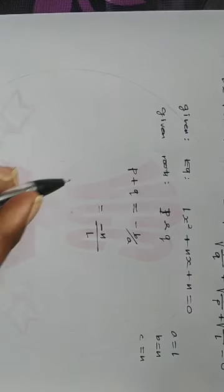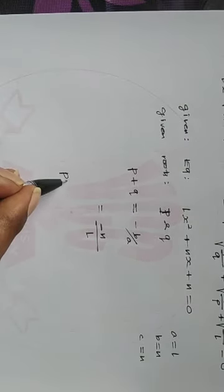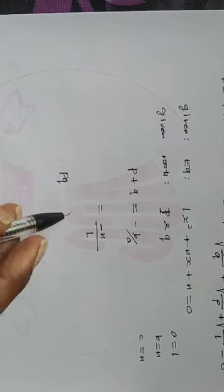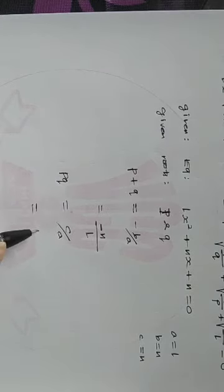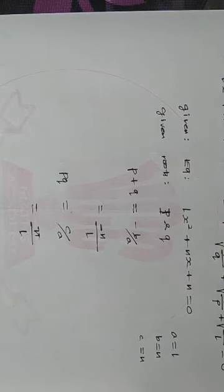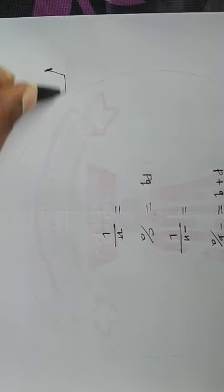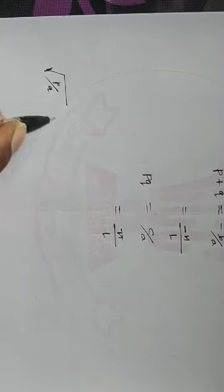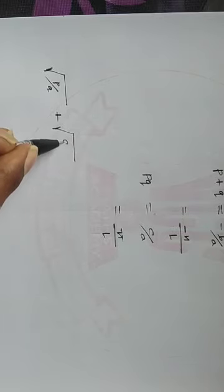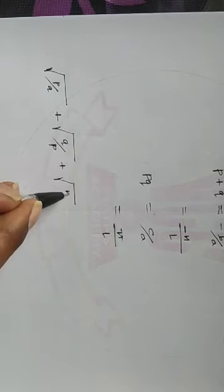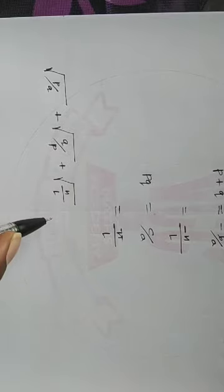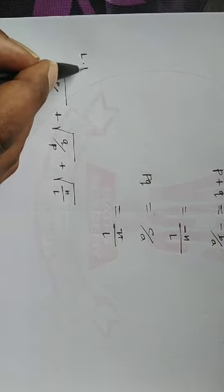So this is the product of roots. P into Q — the formula is C by A. C value is N, A value is L. So the product PQ equals N by L. To show the expression: root of P by Q plus root of Q by P plus root of N by L, this value is equal to 0.